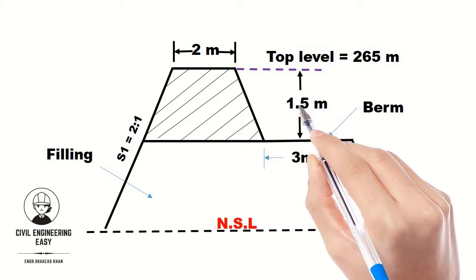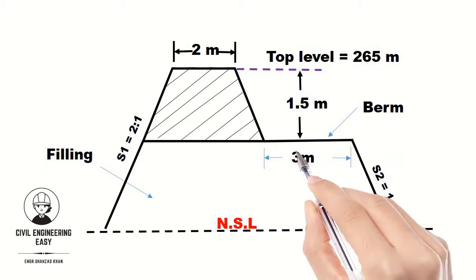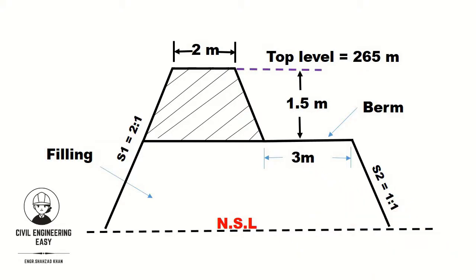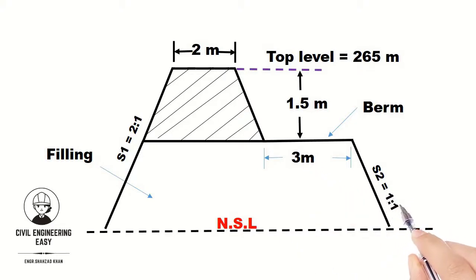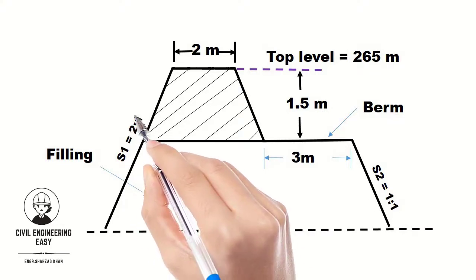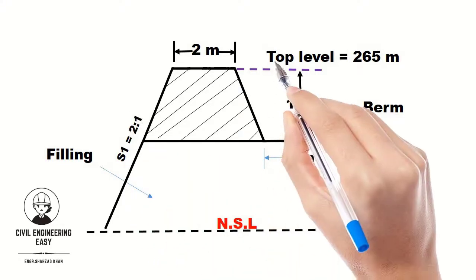1.5 meters down from the top, a 3-meter wide berm is to be provided on one side of the bank. The side slope on the berm side is 1:1, whereas on the other side it is 2:1.